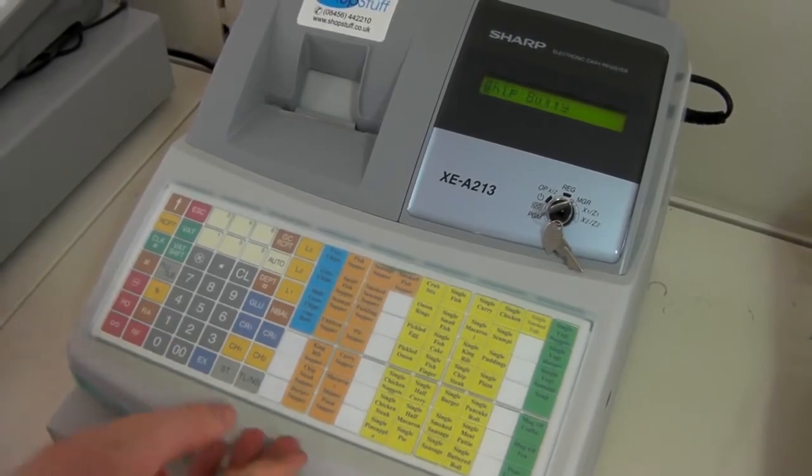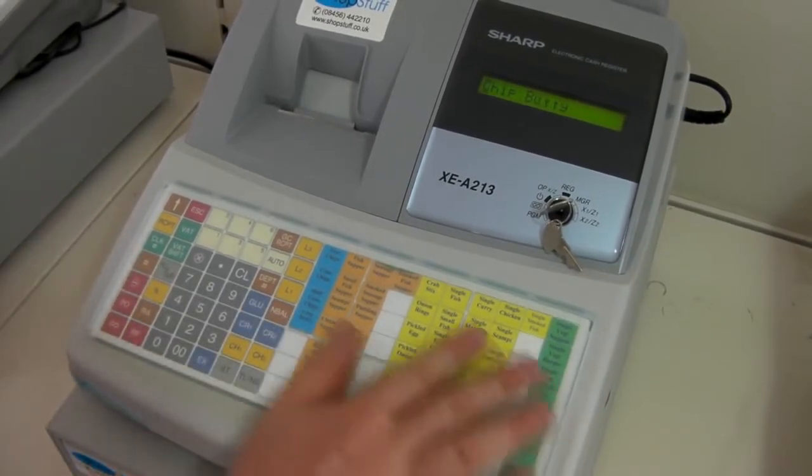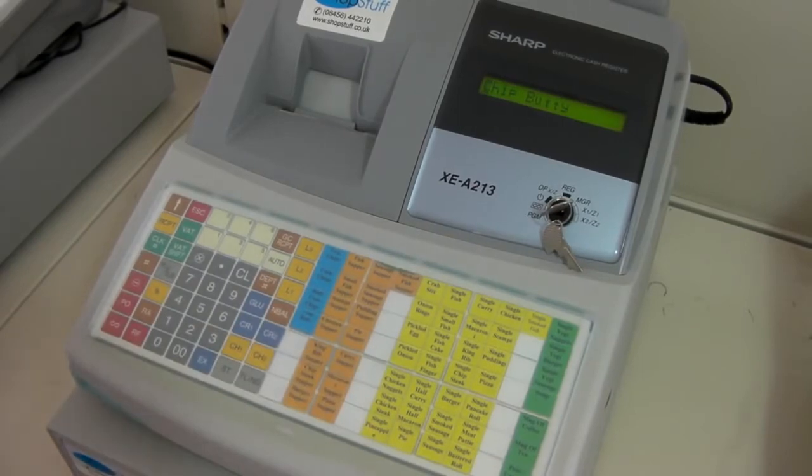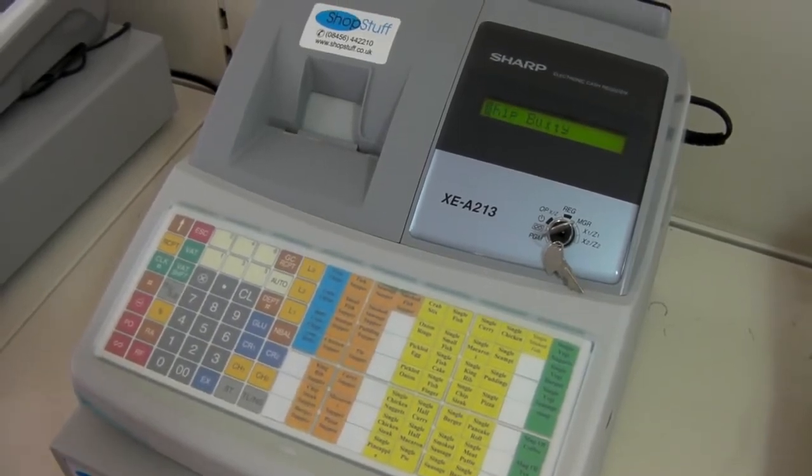You can then, using the QWERTY keyboard underneath the cash register main keyboard, change the product description. In this occasion we're keeping it with chip buddy.